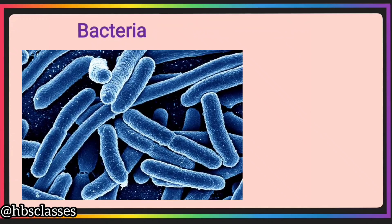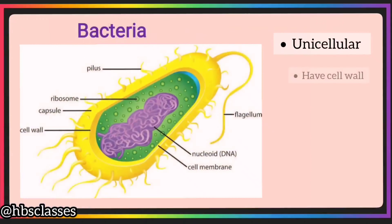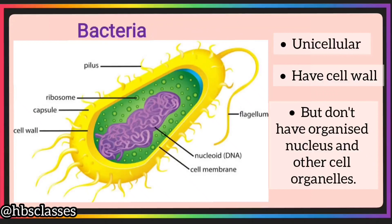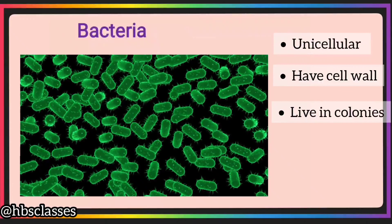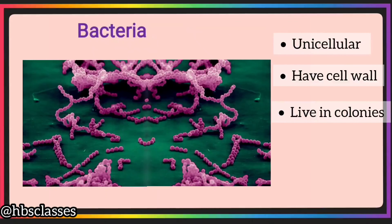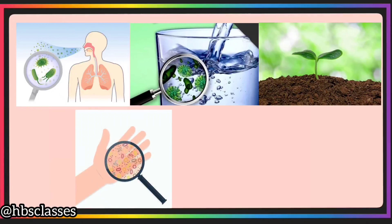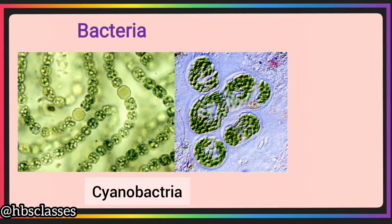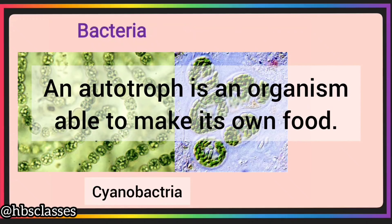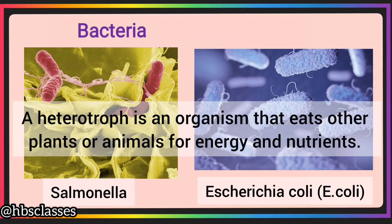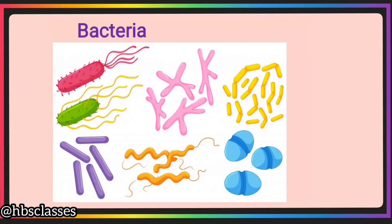Bacteria are very small unicellular microorganisms. Unicellular means they are made up of a single cell. They have a cell wall but do not have an organized nucleus and other structures — their nuclear material is scattered in the cytoplasm due to lack of a nuclear membrane. Bacteria live in colonies, meaning they do not live alone but in groups. They are found in large numbers everywhere: in air, water, soil, on every surface, and even inside our bodies. Some bacteria are autotrophs, meaning they prepare their own food, and some are heterotrophs, meaning they get food from others.